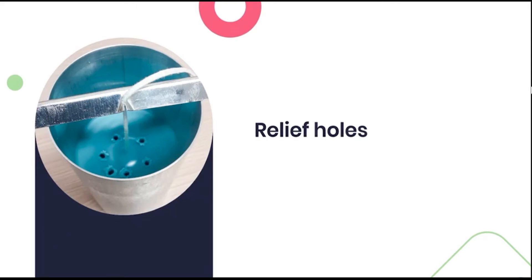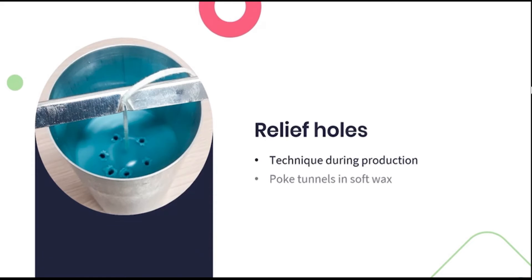Next up are relief holes. These are created by a technique we employ during the candle making process where tunnels are poked into a candle after the first wax pour. You do this by using a stick to prod right down to the bottom of the candle where the wax is partially set. This alleviates any air pockets that may be forming and prepares the candle for the second pour of wax.